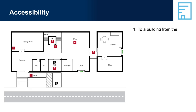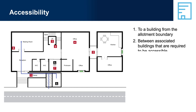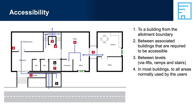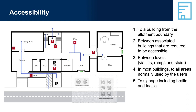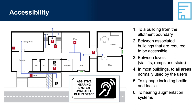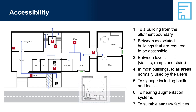Accessibility is required: 1. To a building from the allotment boundary. 2. Between associated buildings that are required to be accessible. 3. Between levels, via lifts, ramps and stairs. 4. In most buildings, to all areas normally used by the users. 5. To signage, including braille and tactile. 6. To hearing augmentation systems. 7. To suitable sanitary facilities.